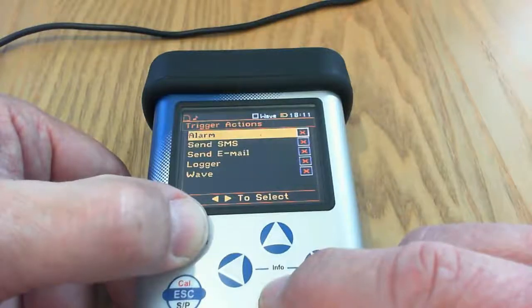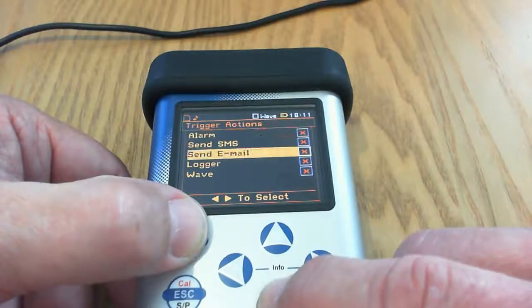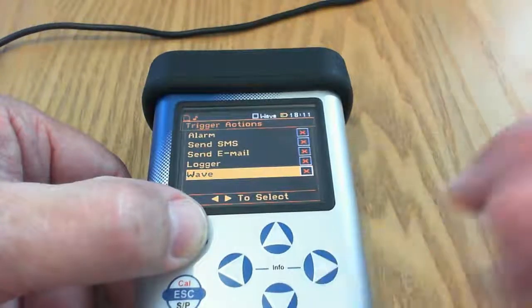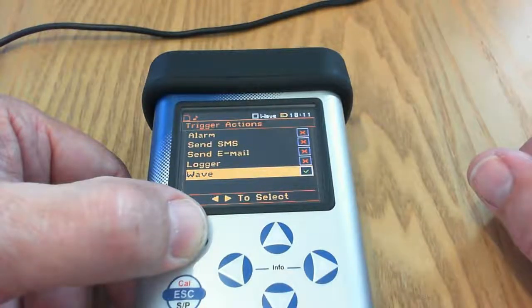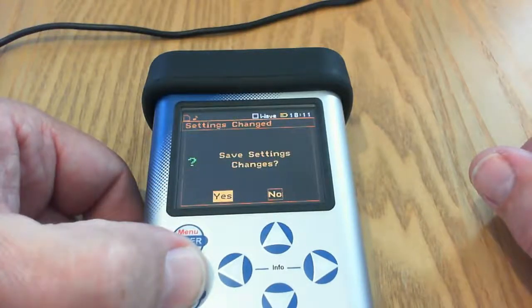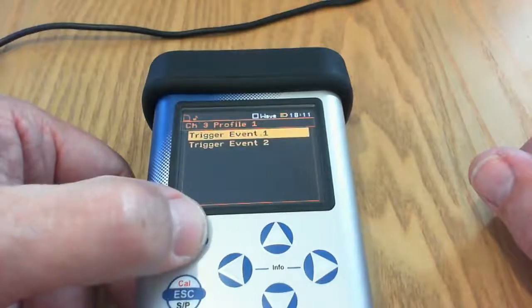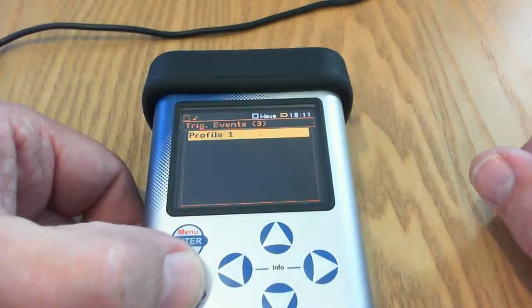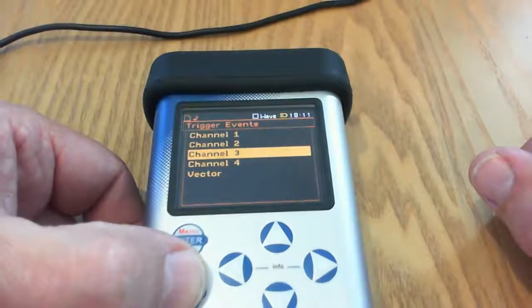Then the trigger actions you can set here. Let's go down to wave. So I want to trigger a wave recording from that trigger level. Press enter to accept those parameters and now escape back to the events setup.